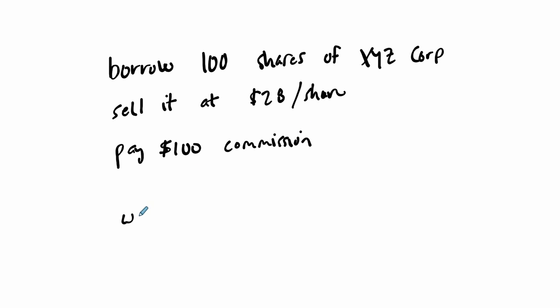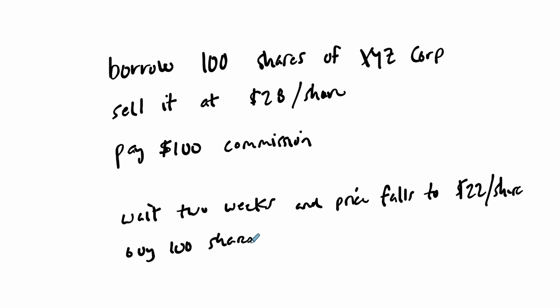So that's where the person loaning you the stock makes the money right away. You pay $100 commission to make that trade. And then you wait. Let's say in your agreement, you wait two weeks, and the price falls to $22. And you think that's the low. The price falls to $22 a share. And you're excited the price has fallen. And you buy 100 shares back. And you return it to the owner. And pay another $100 commission. Every time you trade it, you have to pay $100.